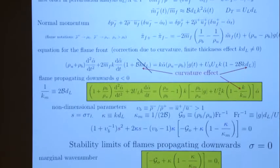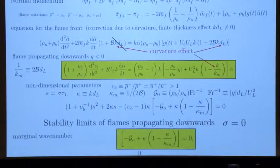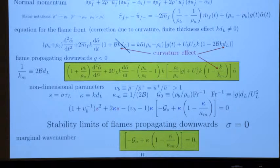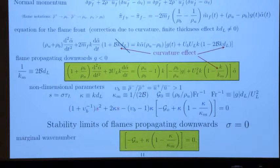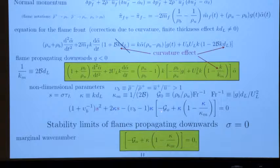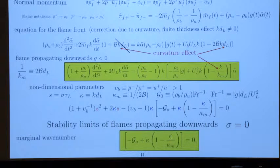If I look for the stability limits corresponding to sigma equals zero, I only need to consider the constant term — the sigma terms disappear — so I look at the remaining term which should be zero. When you look at this term, you see there is a competition. The sign of g depends on whether you are propagating upwards or downwards. Here I have used a sign for downward propagation: g_0 is positive for downward propagation. The minus k-squared over km term is negative, and there is a positive k term resulting from the Darrieus-Landau instability.